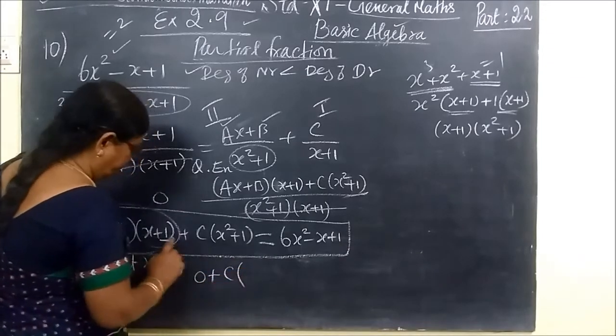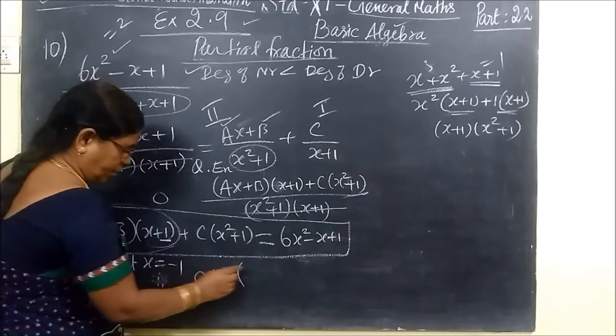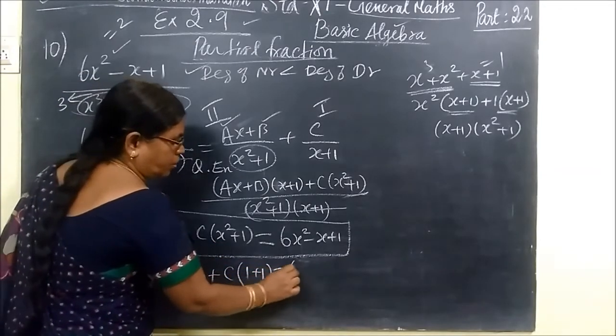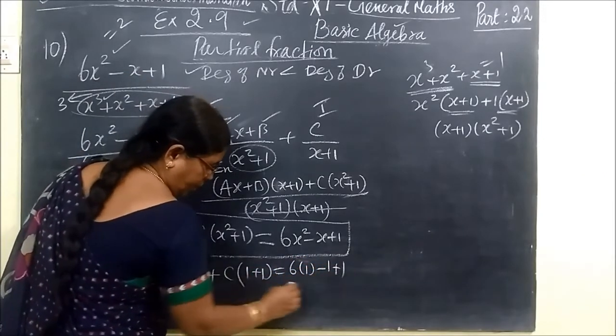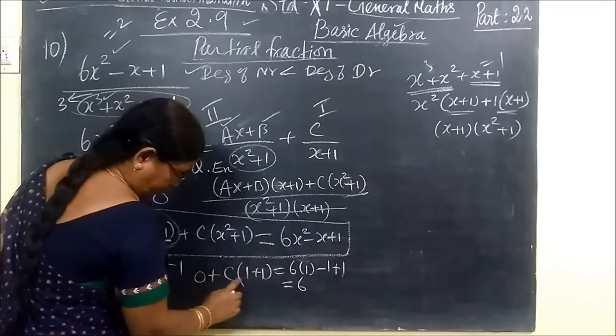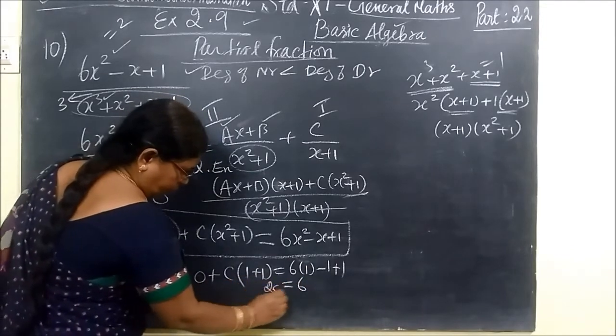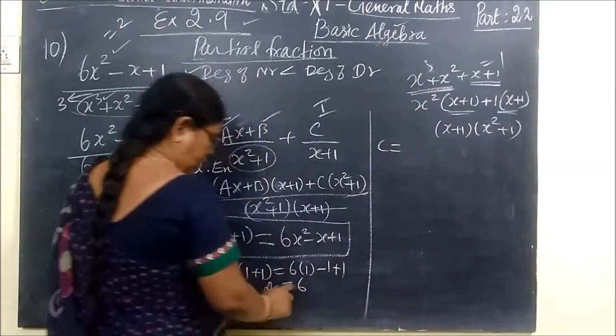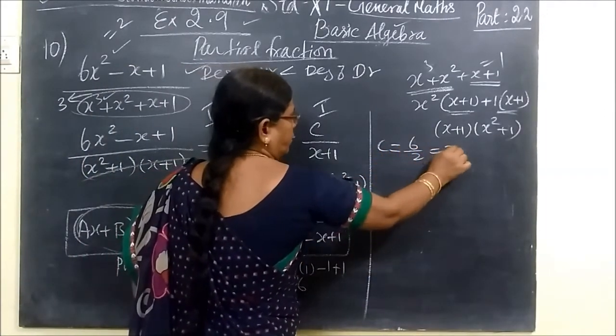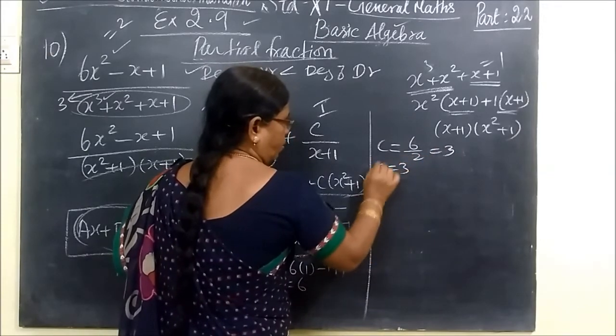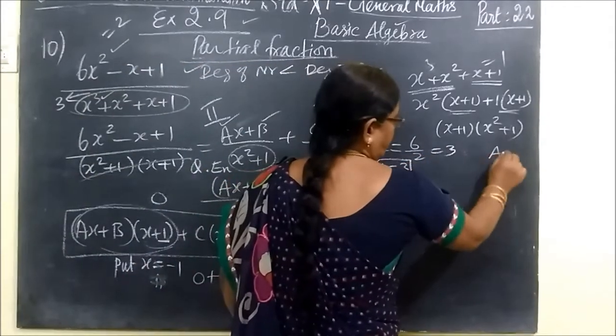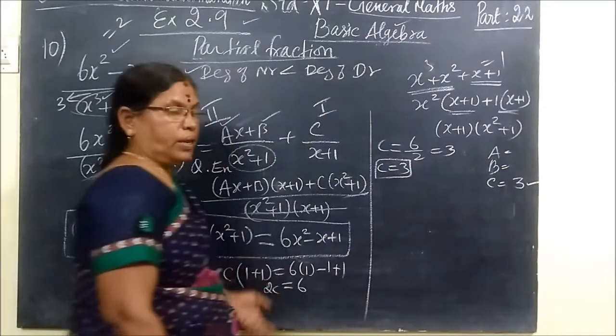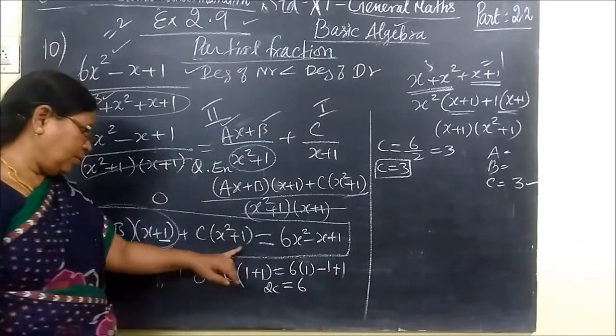Plus C bracket, in here put x is equal to 1, so 1 plus 1, 6 bracket, 1 minus 1 plus 1. So this is equal to 6. In here we know 2C, which implies C equal to 6 by 2 equal to 3. So you know the value of C. C value is 3.